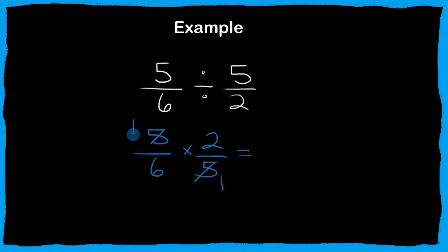so the five and the five become a one and a one, the two and the six get reduced to one over three, and now we have one times one is one, three times one is three, and the answer is one-third.